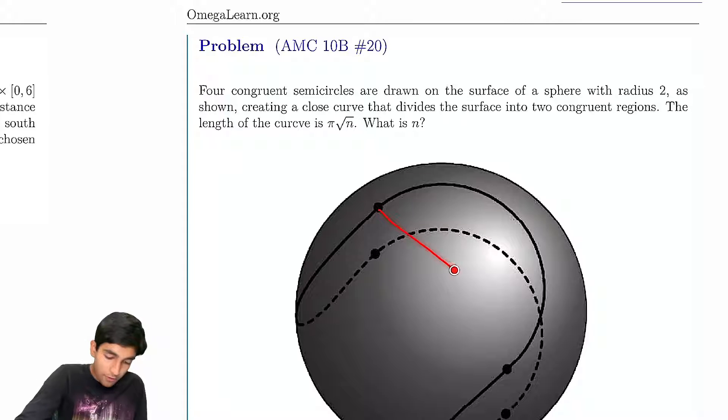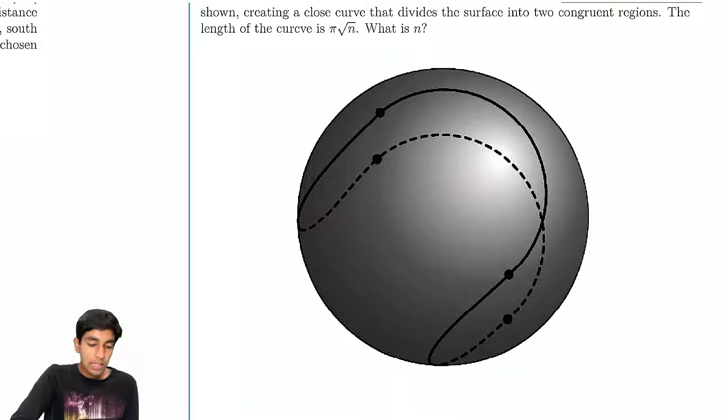So, the sphere has radius 2, and if we can find the radius of these semicircles, then we would be done. Then it would be a pretty simple finish from there. So let's find the radius of these semicircles. How do we do this?